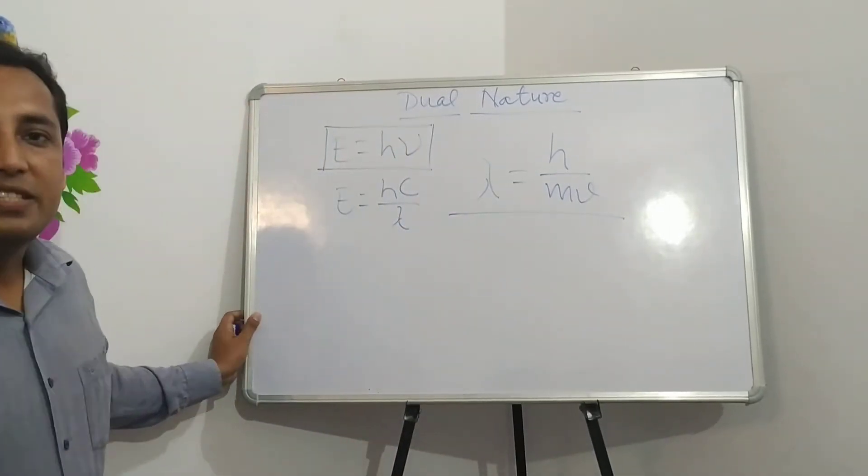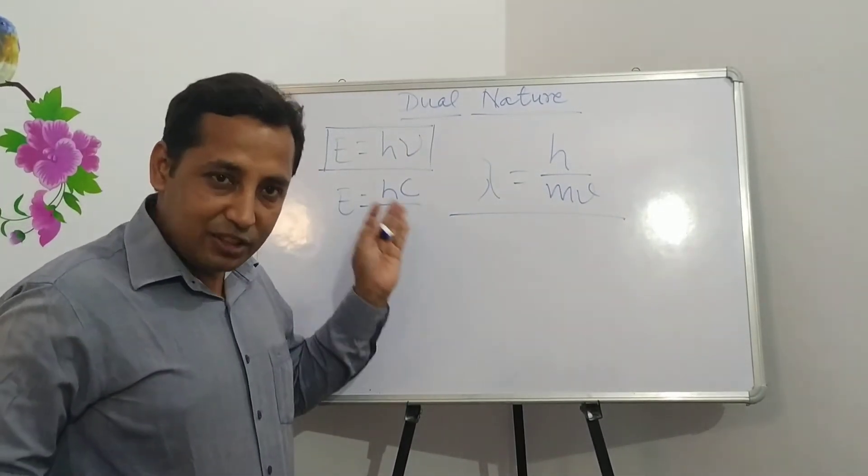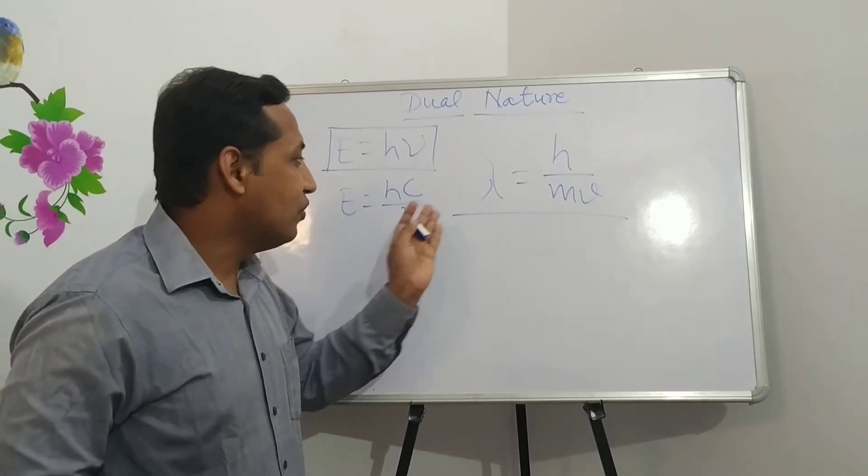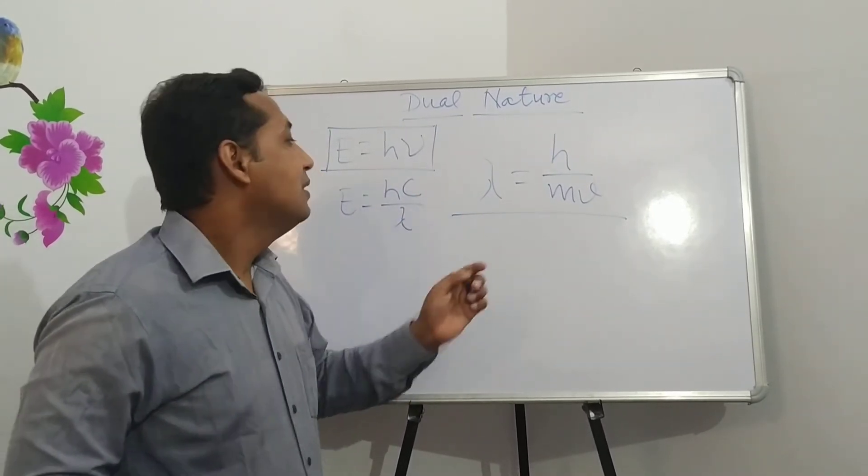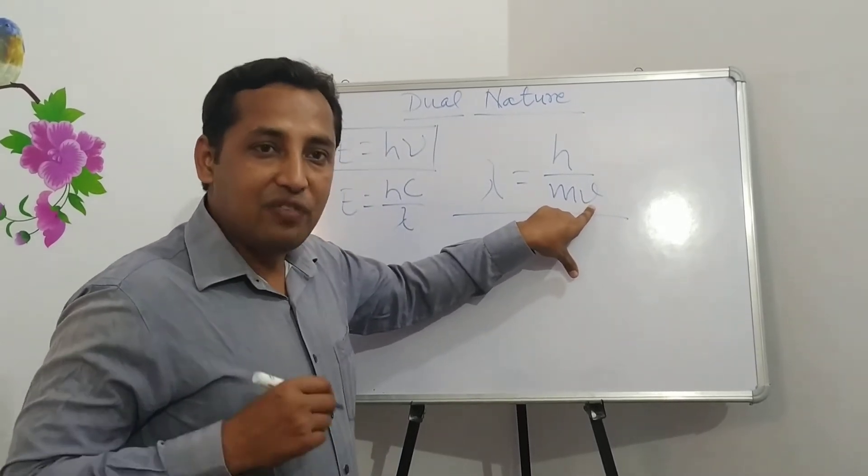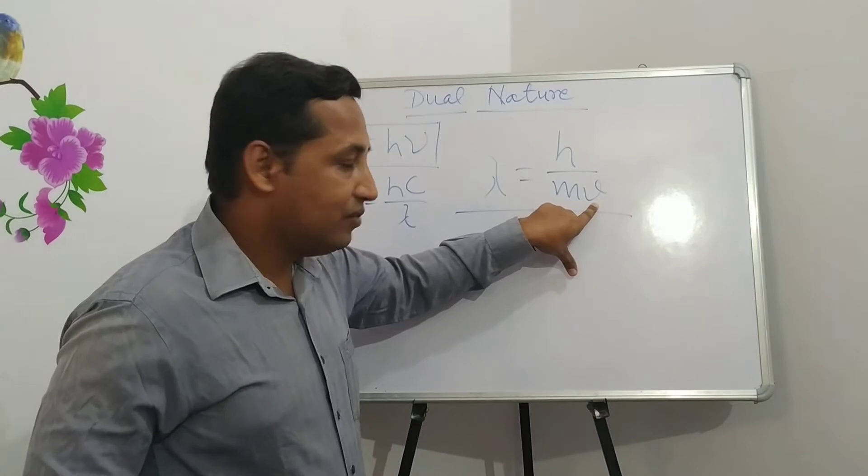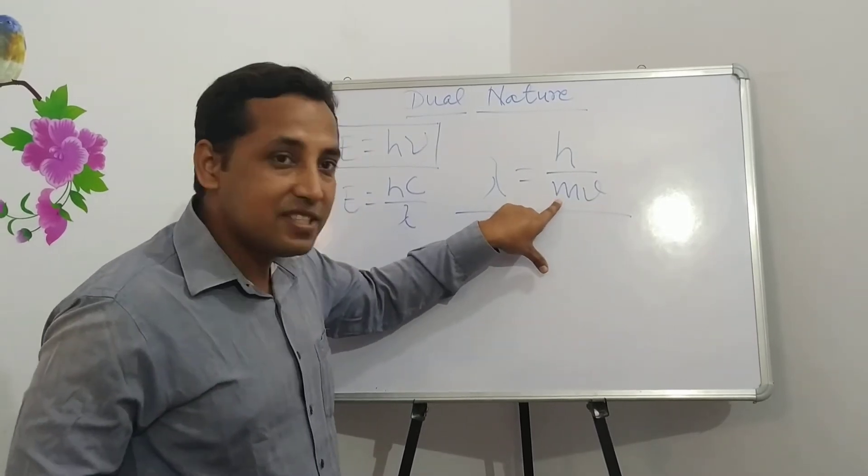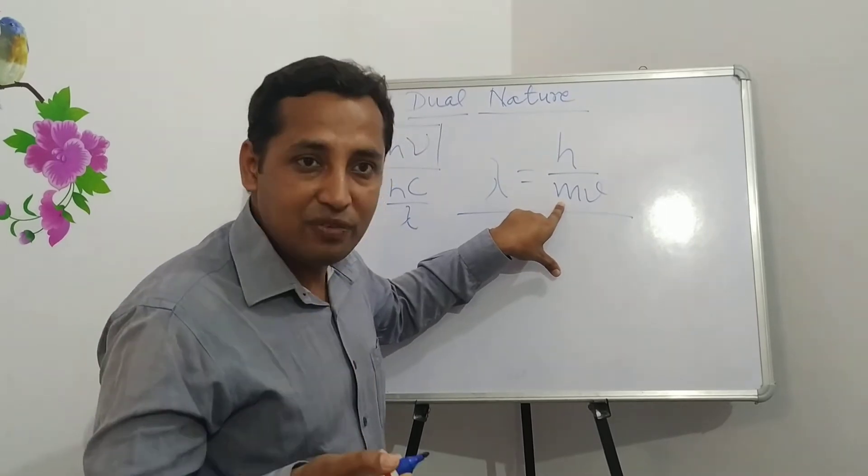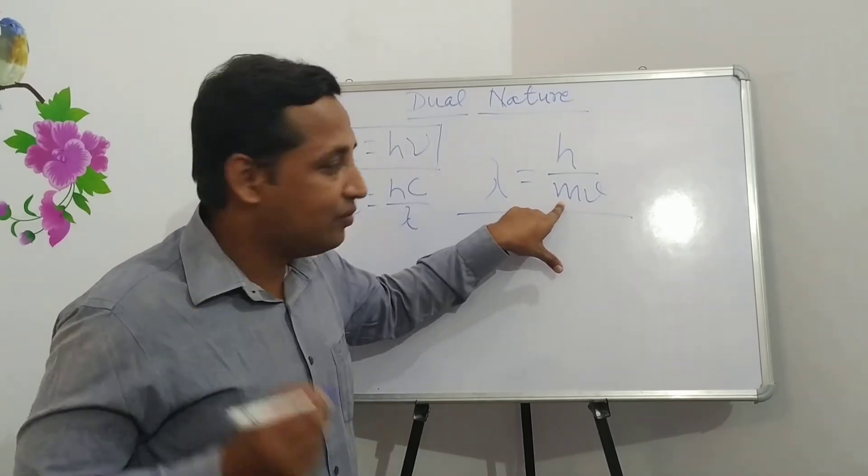Where λ is the wavelength of electromagnetic waves, v is the velocity of electron, and m represents the mass of electron.